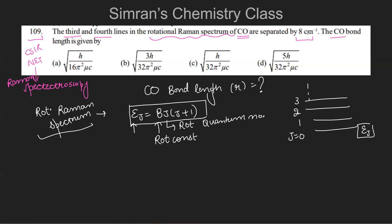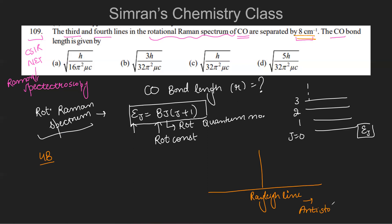In the rotational Raman spectrum, we have a Rayleigh line in the center. On one side we have anti-Stokes lines, and on the other side we have Stokes lines.